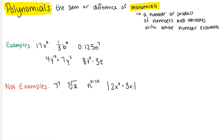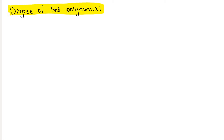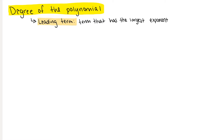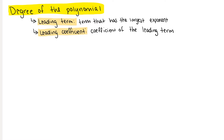Let's look at the degree of the polynomial. We find the degree of our polynomials using the leading term. The leading term is the term that has the largest exponent, and the leading coefficient is simply the coefficient of the first term — the number tied to the term. So for example, if we had 7y as our term, 7 would be our coefficient.